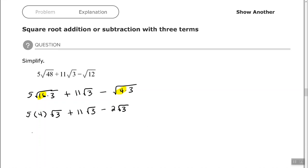Okay, so now we have 20 plus 11 minus 2, all times the square root of 3, since all three of those have the factor of square root of 3. So 20 plus 11 is 31, 31 minus 2 is 29 times the square root of 3.